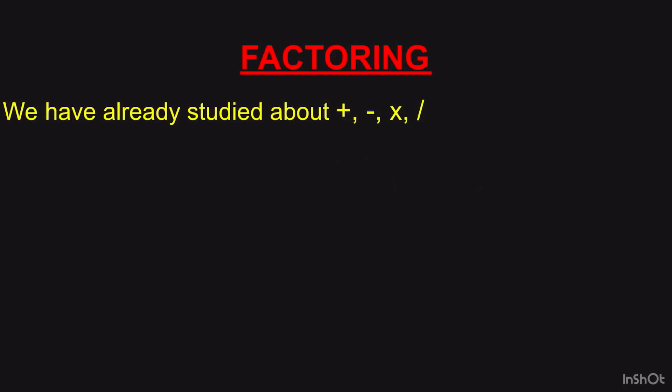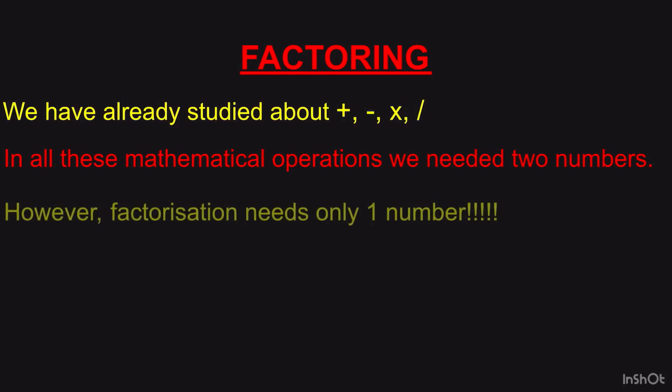Let us begin with factors. We have already studied addition, subtraction, multiplication, and division. In all these mathematical operations we needed 2 numbers. Supposing we were given 2 and 3, we could add 2 plus 3, or subtract, multiply them — but we always needed 2 numbers. However, factorization needs only one number.